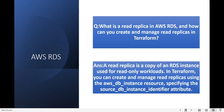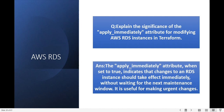Explain the significance of the apply_immediately attribute for modifying an AWS RDS instance in Terraform. The apply_immediately attribute, when set to true, indicates that changes to the RDS instance should take effect immediately without waiting for the next maintenance window. This feature is very helpful for making urgent changes.